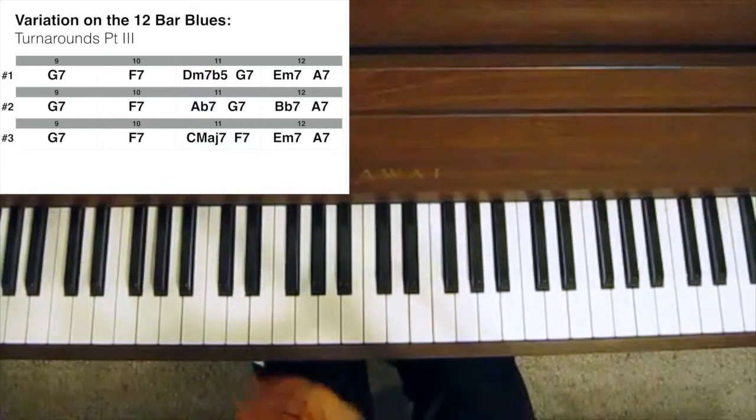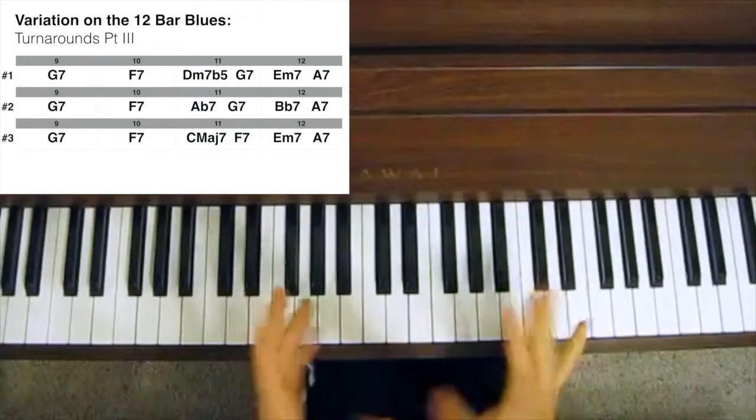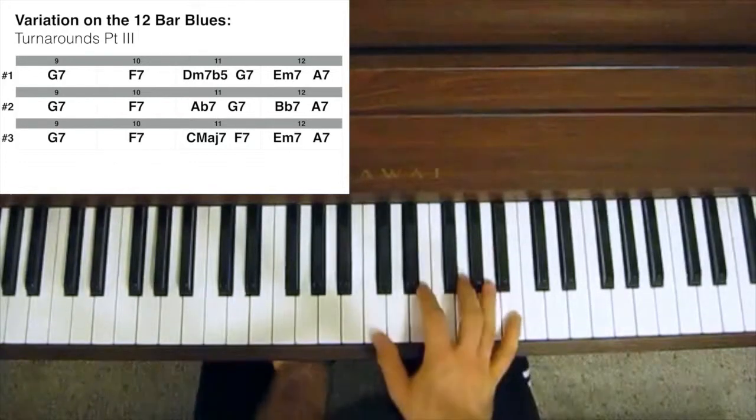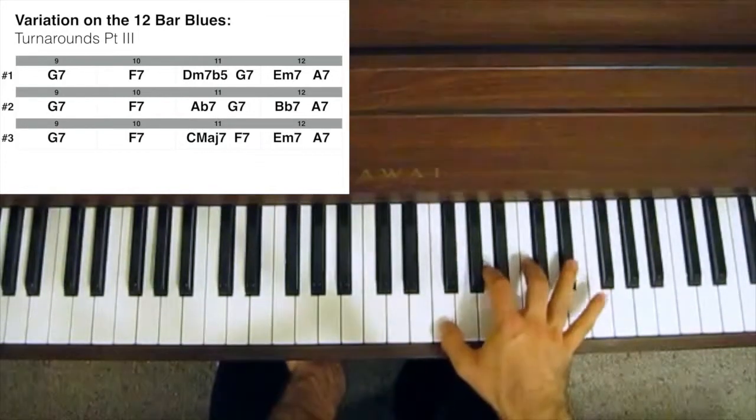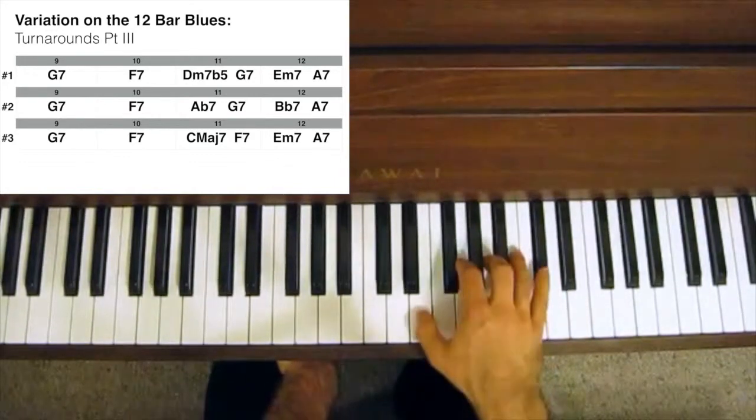Now, the last turnaround I'm going to show you in this lesson uses a similar idea but kind of changes around that chord progression a bit. Instead, it goes Cmaj7 to F7 to Em7 to A7.